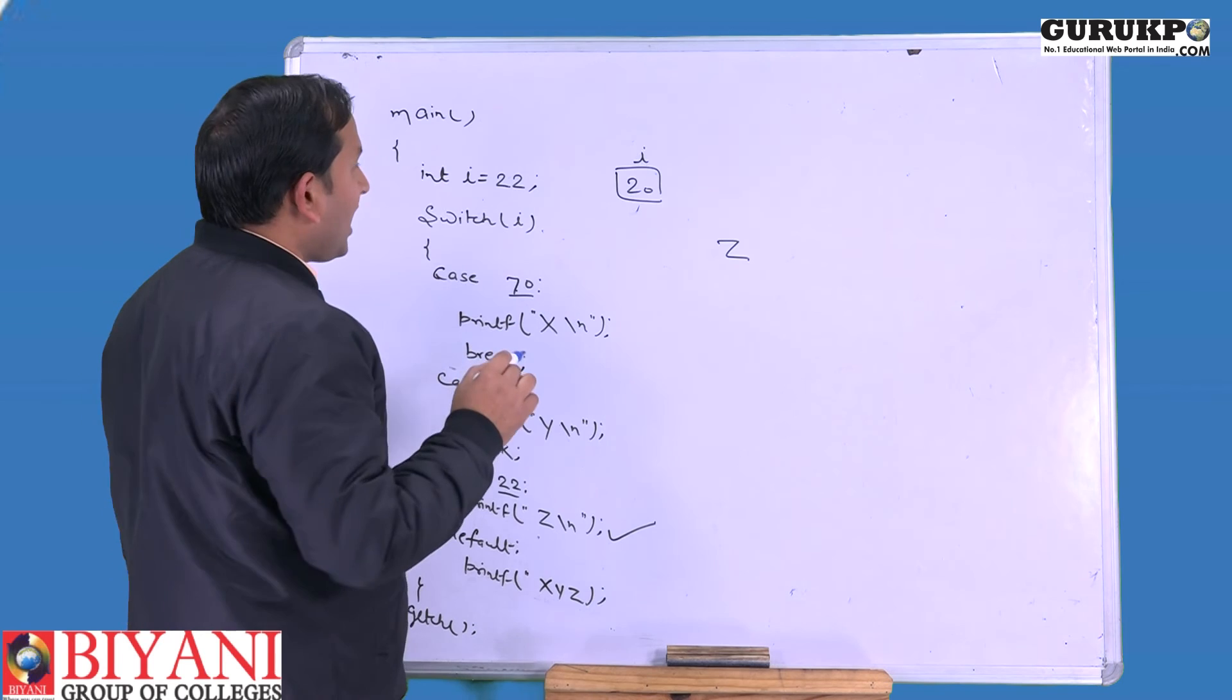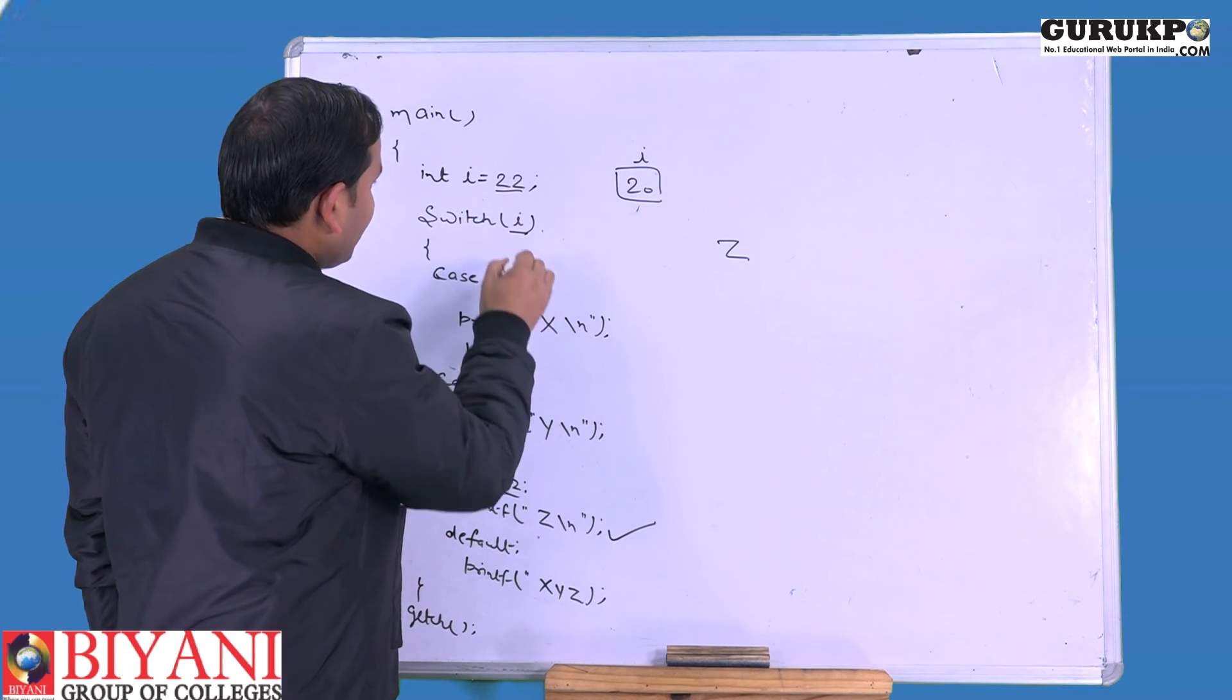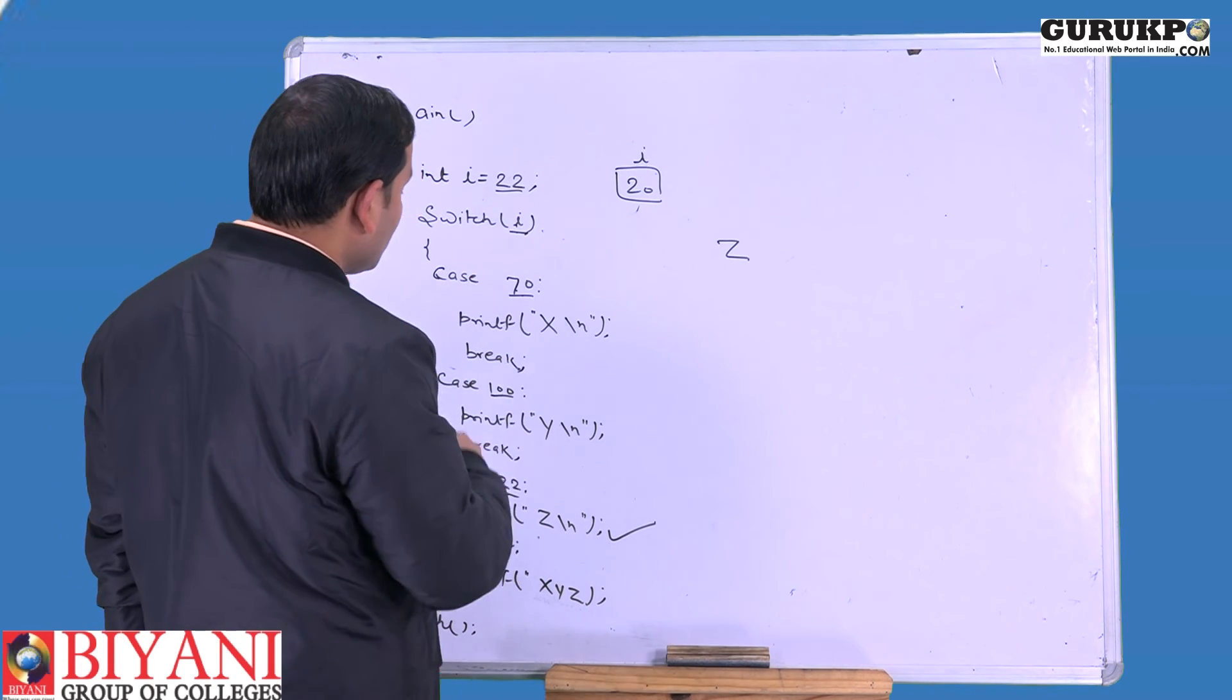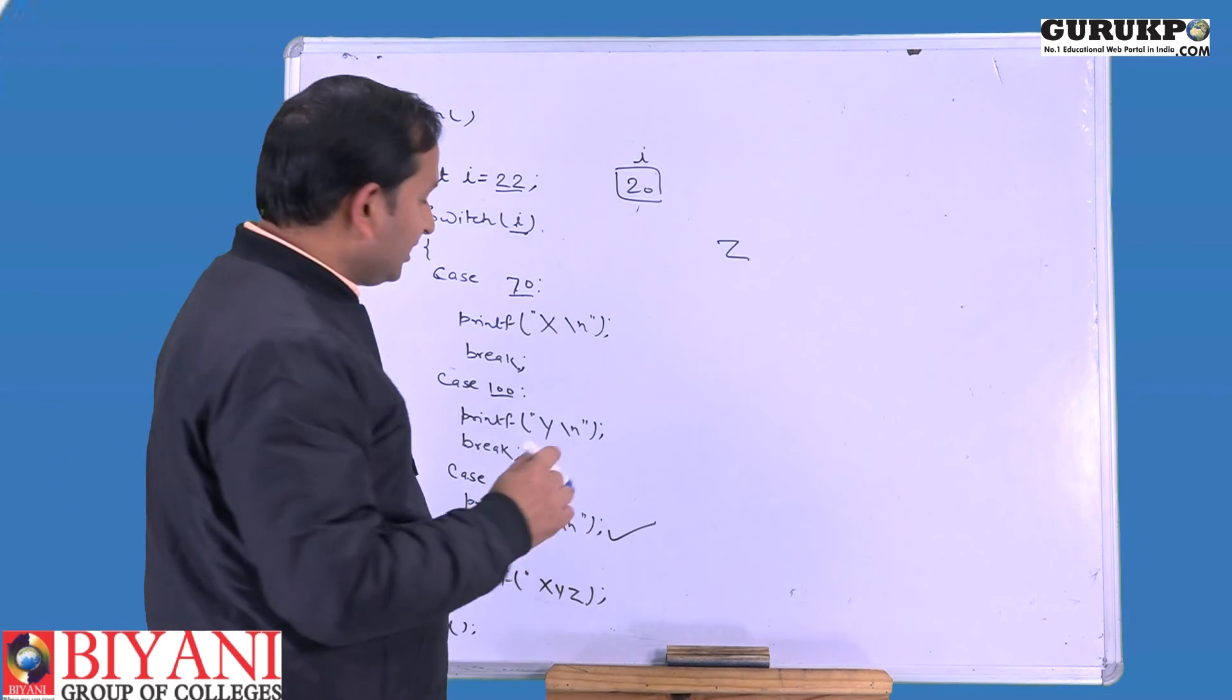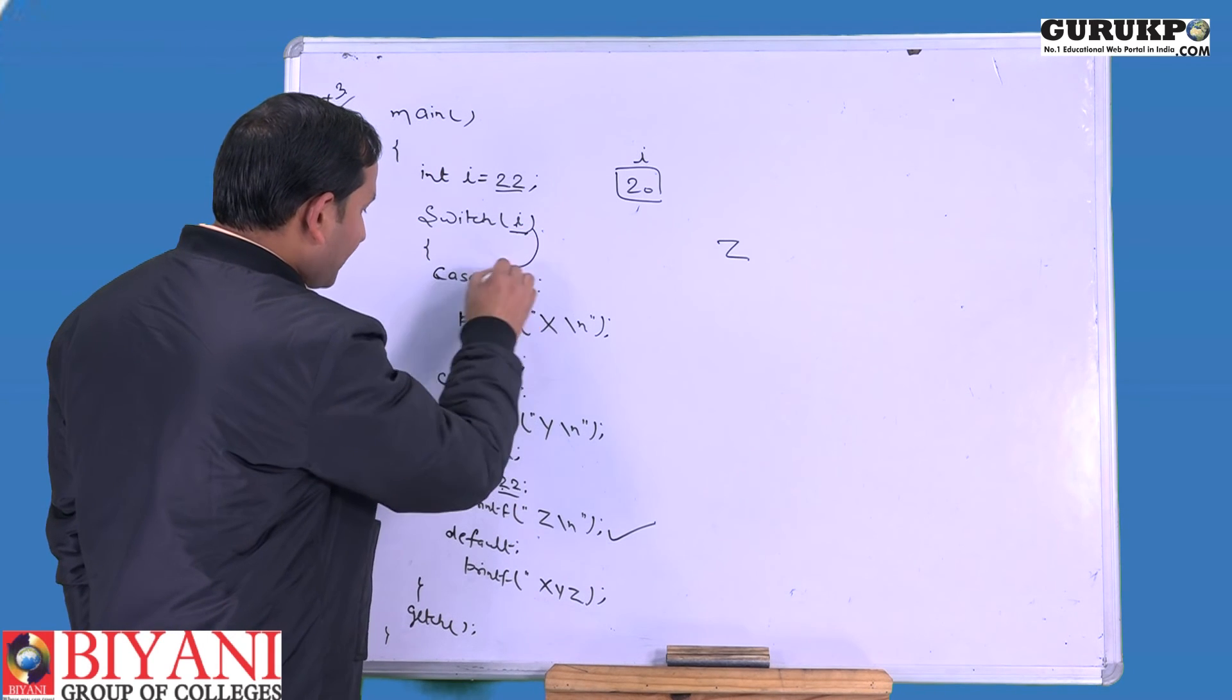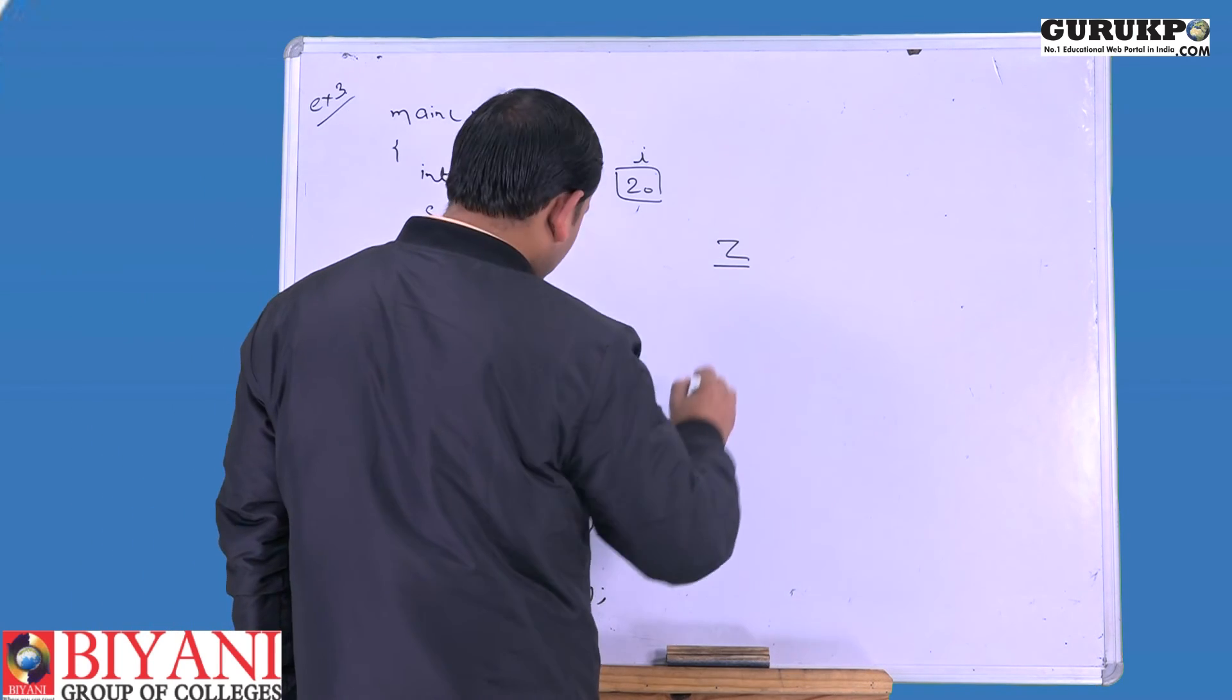Here the value of i is 22. Control compares this switch value to the case value. 22 is not equal to 70, then control goes to check the next case, which is 100. Now 22 is not equal to 100, then control checks the next statement, case 22. So control directly goes here and it will print value Z on our output screen.